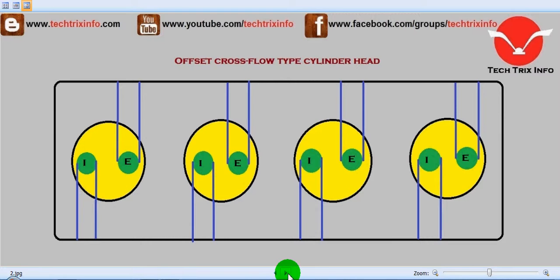In the offset cross flow type cylinder head, the inlet and the exhaust manifolds are placed in opposite directions. They are actually offset and cross flow is happening. So they are called offset cross flow type cylinder heads.